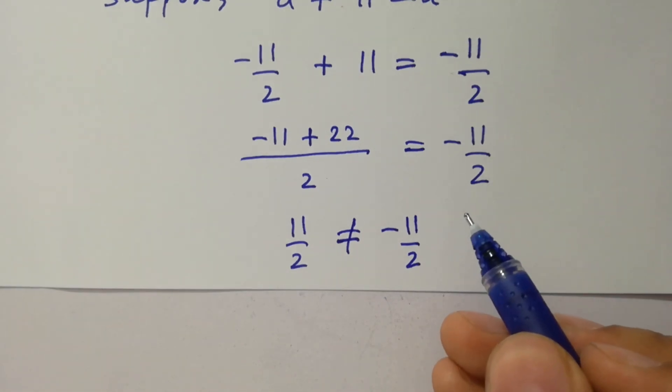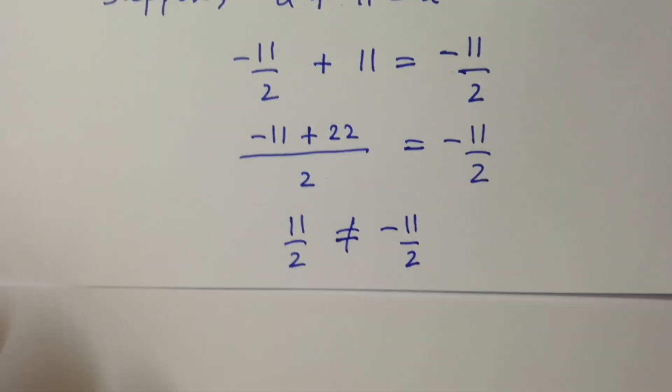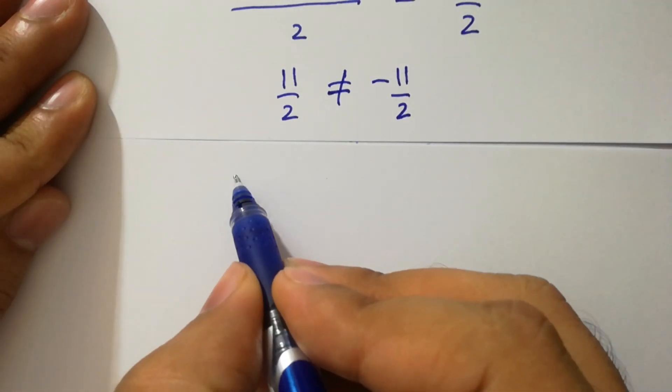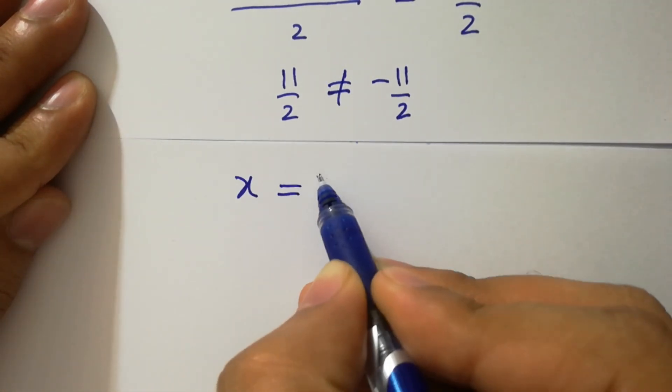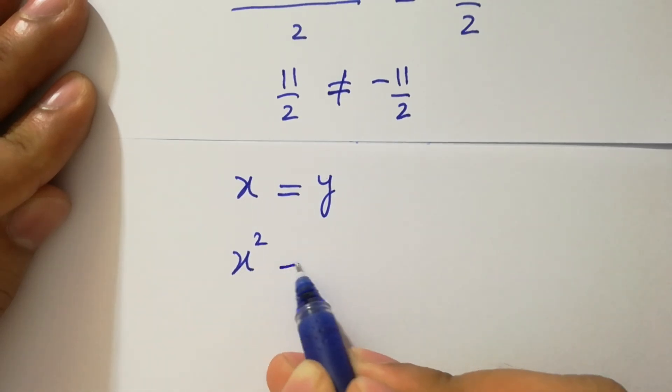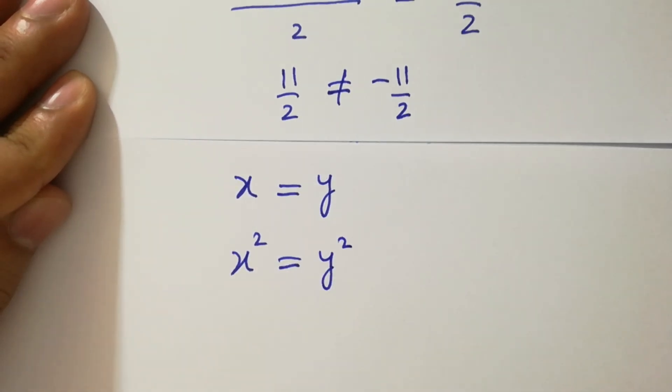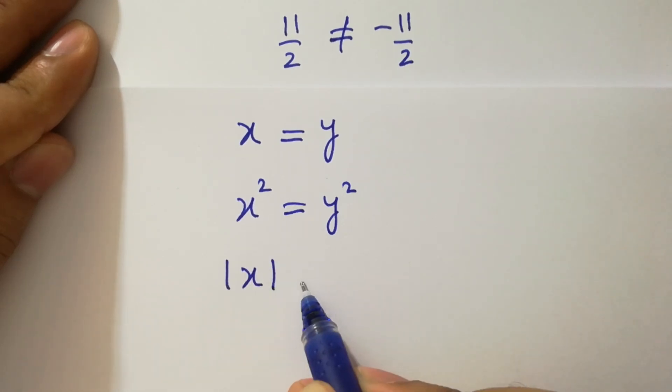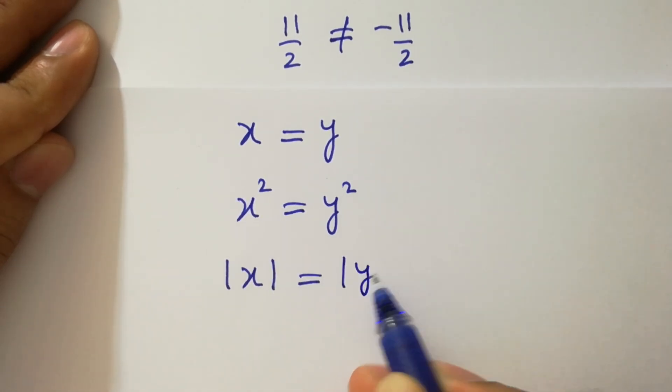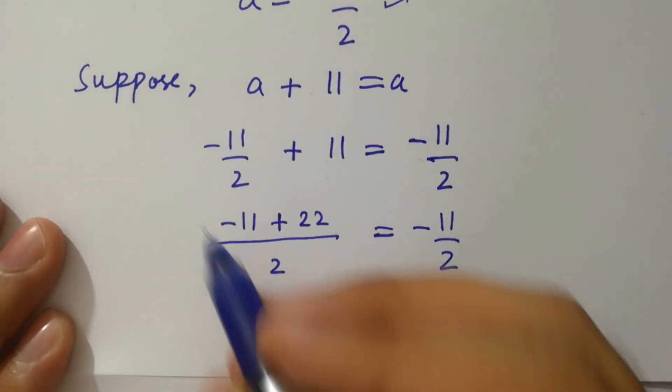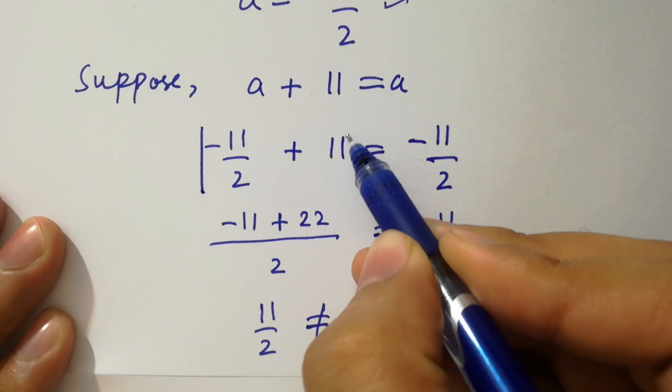As x equal to y, x square equal to y square, and also absolute value of x equal to absolute value of y, then we should take modulus on both sides.